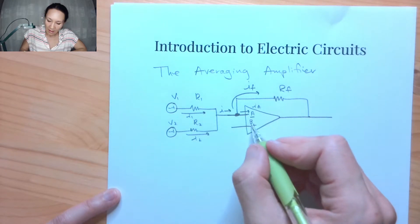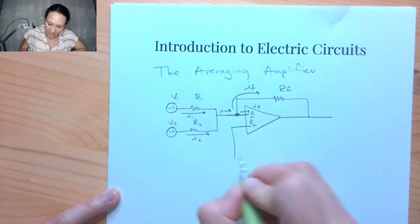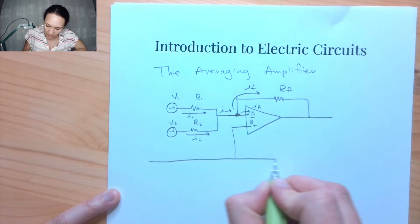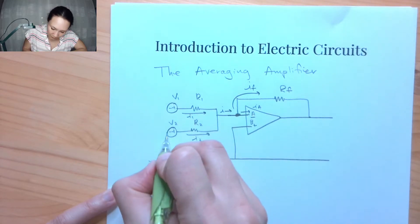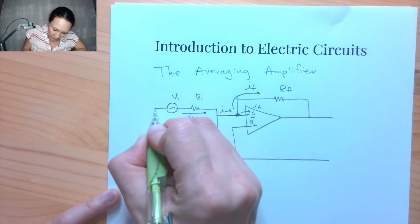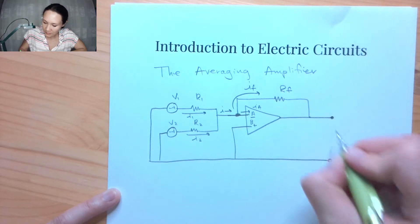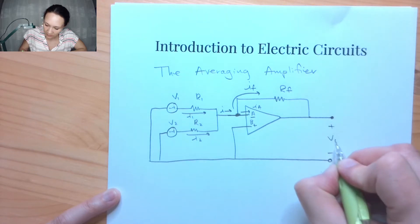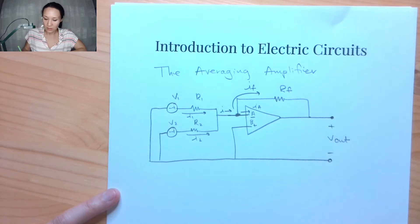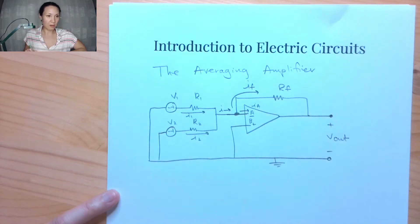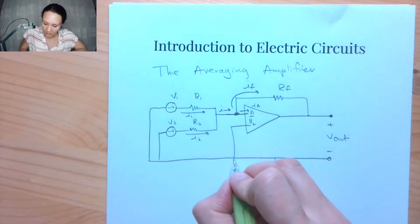And then my B input here, I'm actually going to connect this directly to ground. So if I connect the other side of these voltage sources to ground, and also over here on the other side, I have my V out is measured between these two terminals here. And I'll put the little ground symbol there so you know that this line down here is zero volts.